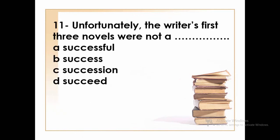Number eleven: 'Unfortunately, the writer's first three novels were not a __.' We know that 'a' must be followed by a noun. The options are: successful, success, succession, and succeed. The answer is 'success' because we need a noun after the article 'a'. Without 'a', we would say 'were not successful'.